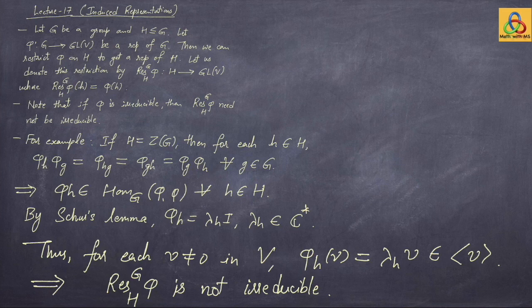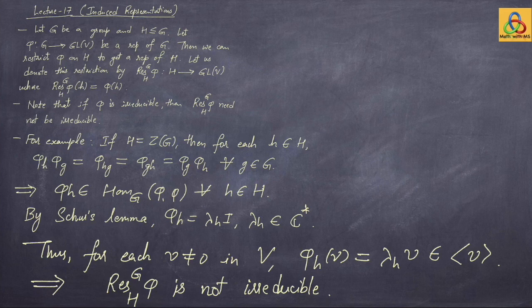Now we want to go in the other direction: given a representation of a subgroup H of a group G, we want to extend it to a representation of the whole group. To do that, we will first work with class-preserving functions — extending them from the subgroup H to class-preserving functions on the whole of G — and then extend representations from H to G.